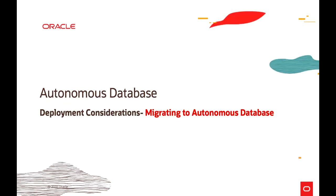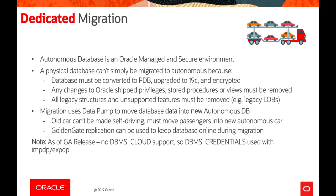Autonomous Database is an Oracle-managed and secure environment, and a physical database cannot simply be migrated to it. The database must be converted to a pluggable database, upgraded to 19c, and encrypted if it is not already. Any changes to Oracle-shipped privileges, stored procedures, or views must be removed before bringing a legacy database to Autonomous. All legacy structures and unsupported features — such as large objects (LOBs) — must also be removed. Migration uses Data Pump to move data into the new Autonomous Database.